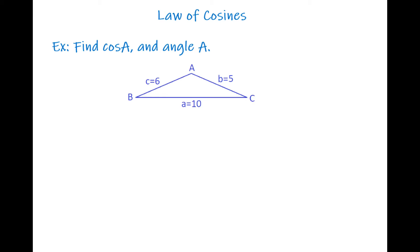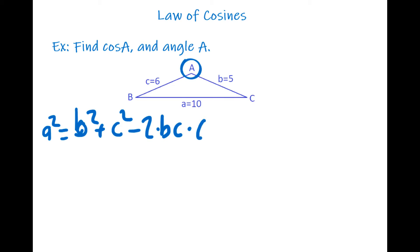Our next question says: find cosine A and angle A. We have a triangle and we need to find angle A, so I'll start with the formula: a squared equals b squared plus c squared minus two times bc times cosine A. We know everything except angle A, so we plug in all the information. We have a = 10, so a squared is 100.